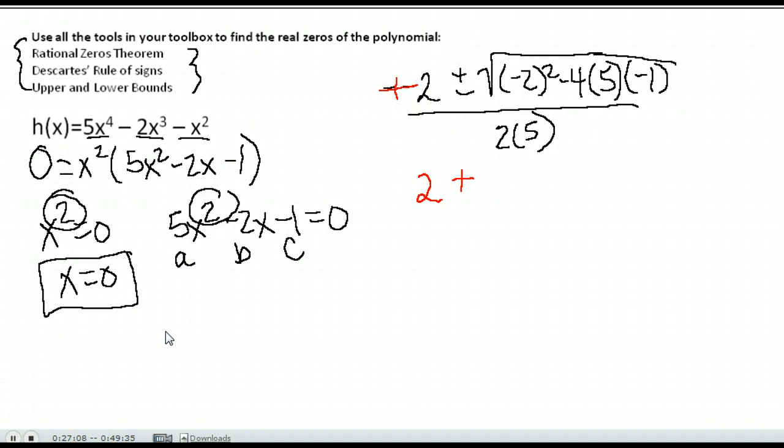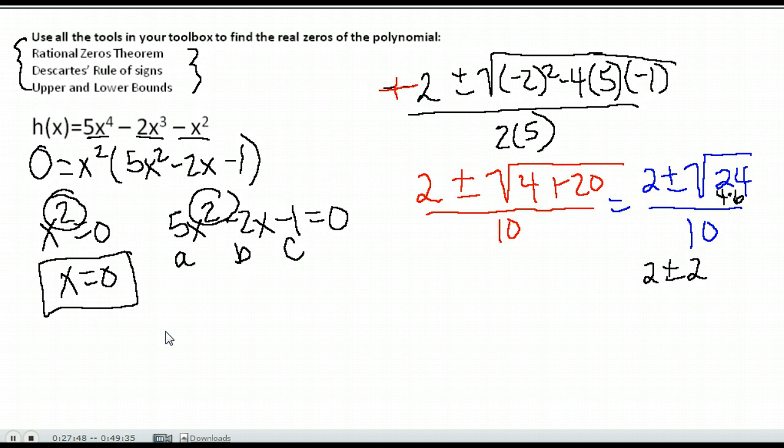So as I simplify this, negative and negative makes that a positive 2 on the front. Inside I have positive 4 plus 20 all over 10. That gives me 2 plus or minus the square root of 24 over 10. Now we want to simplify as much as we can. 24 doesn't have a whole number square root. It's not a perfect square. However, in algebra 2, you should have learned that to simplify radicals, notice 24 is the same as 4 times 6. 4 has a square root. We want to bring out as much as we can. The square root of 4 is 2, so I bring out that as a 2. 6 doesn't have a whole number square root, so we leave it inside.